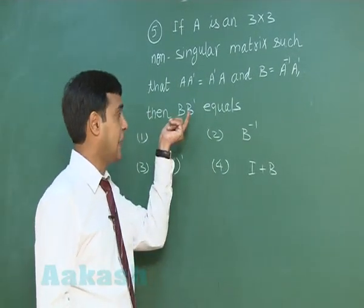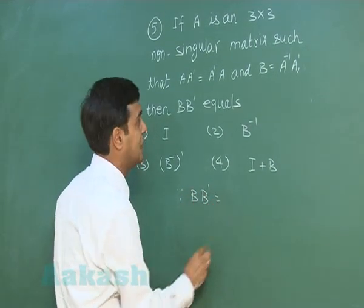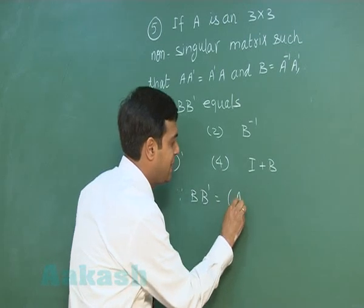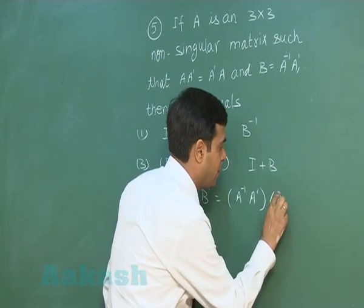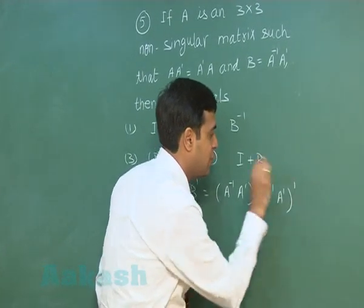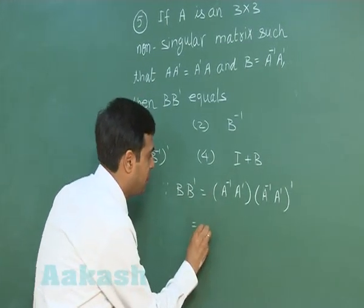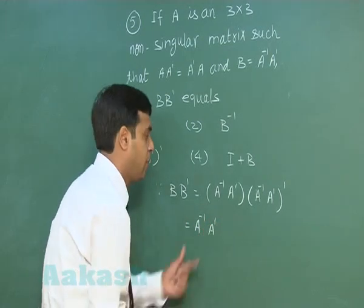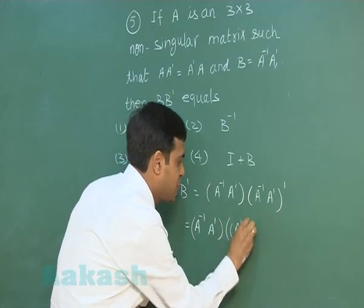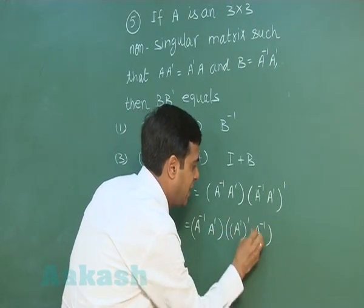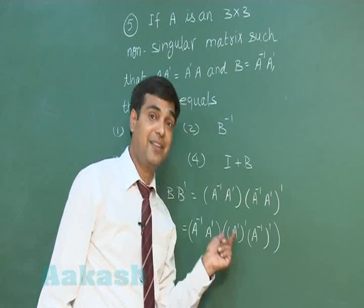Let's start solving BB-transpose. B equals A-inverse times A-transpose, so B-transpose equals (A-inverse · A-transpose) whole transpose. Transpose of a product reverses the order: A-transpose-transpose multiplied with A-inverse-transpose. Transpose of transpose gives the matrix back, that is A.